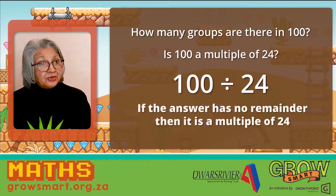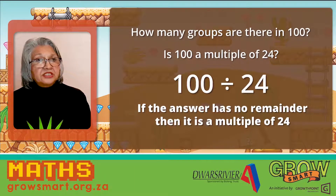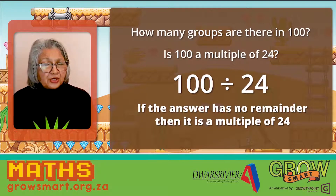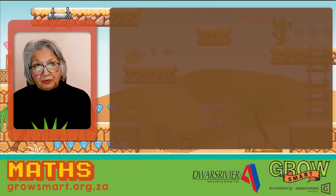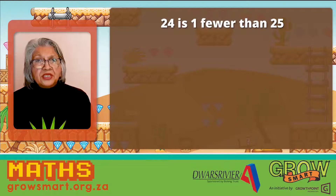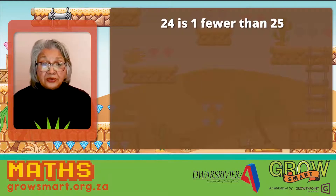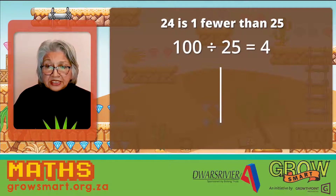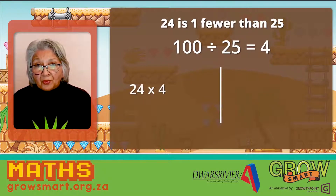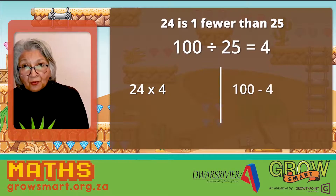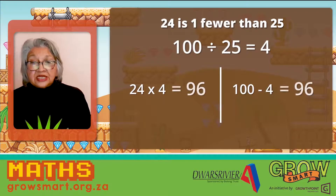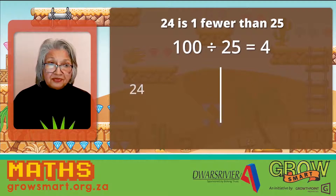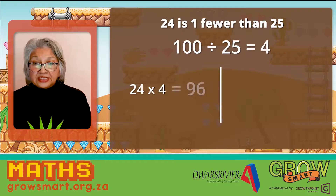And if there is no remainder, then we know the number of 24s. Now let's take a good look at 24. 24 is one fewer than 25, and we know that 100 divided by 25 is equal to 4. It means that 24 multiplied by 4 is equal to 100 minus 4, which is equal to 96. So 24 multiplied by 4 is equal to 96.